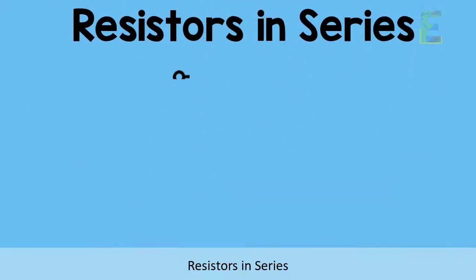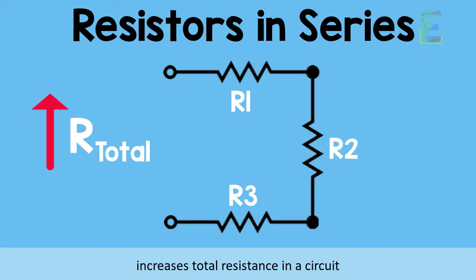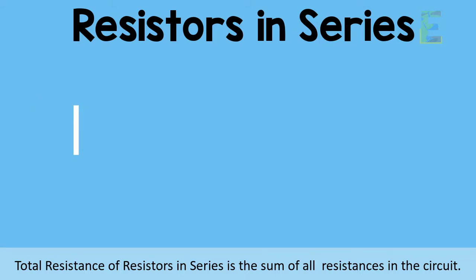Resistors in series, due to its arrangement, increases total resistance of a circuit. Total resistance of resistors in series is the sum of all the resistances in a circuit.